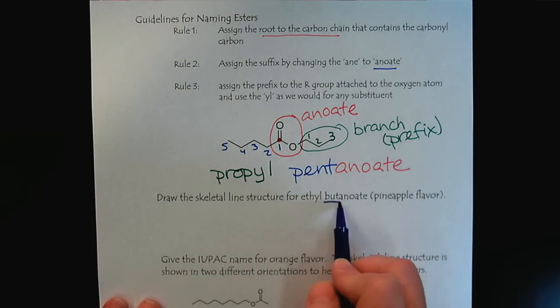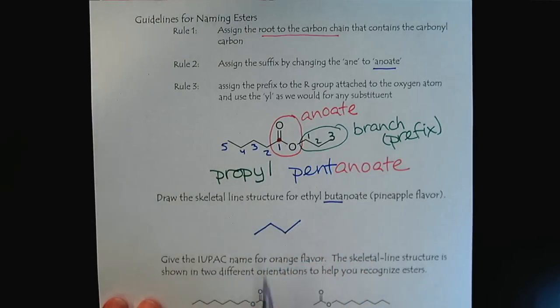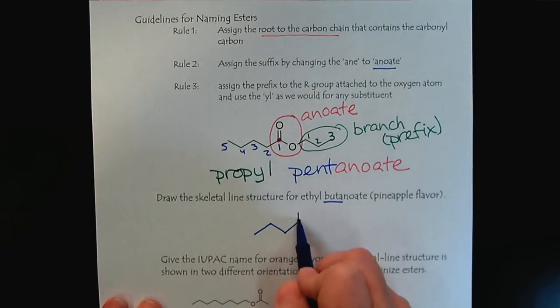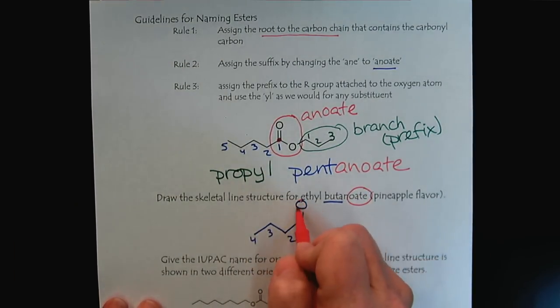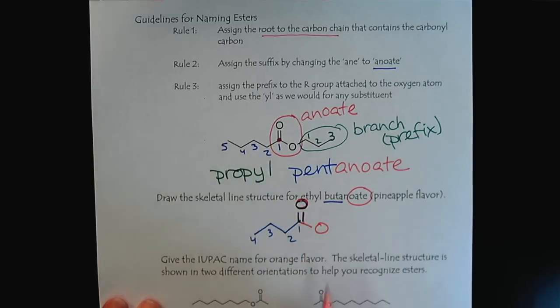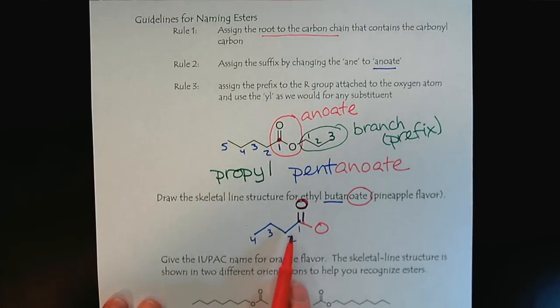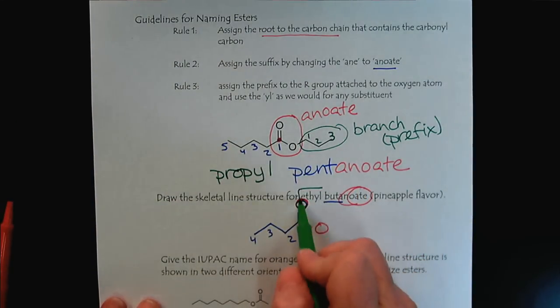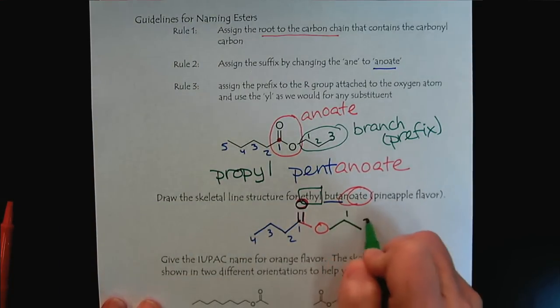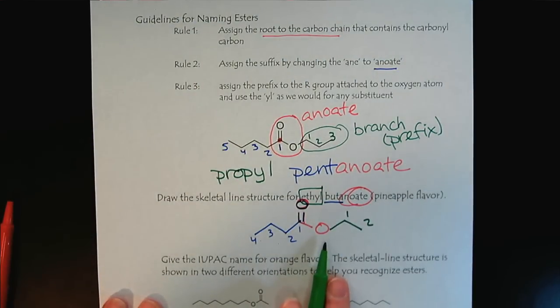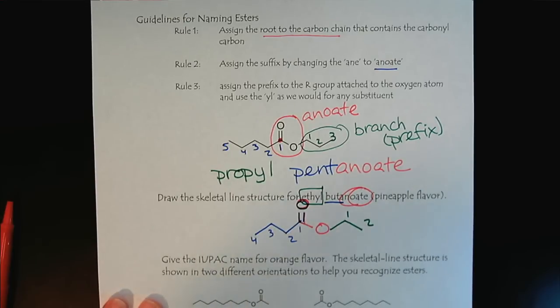So the bute tells us we have a four carbon chain. And we know we put the carbonyl off the first carbon. And the oate, the oate part tells us here we have the ester. And then last but not least, even though it comes first in the name, ethyl. So that would tell us we have two carbons coming off of our ester group, oxygen.